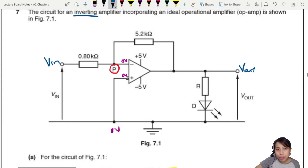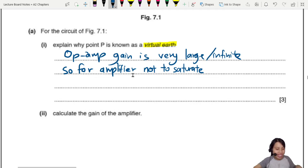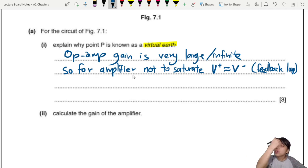For the amplifier not to saturate, both inputs must be the same. So the feedback loop will try to adjust V minus until it is the same as V plus. So for the amplifier not to saturate, V plus must be pretty close to or equal to V minus, which is zero volt. They have to be near zero volt, which is earth.